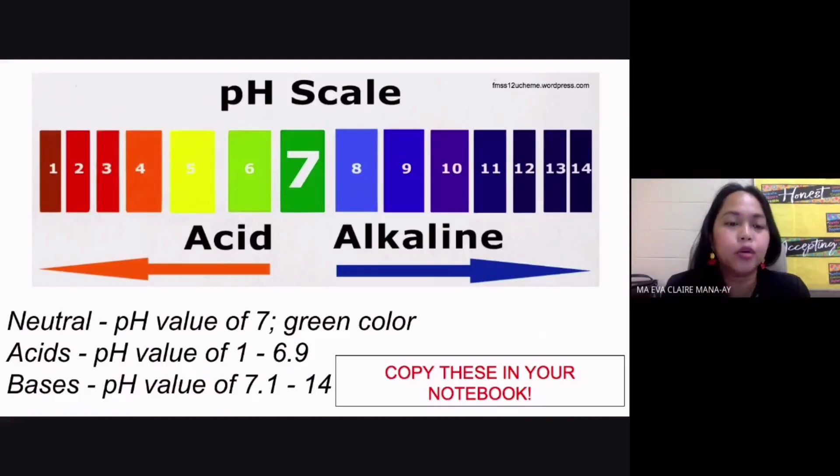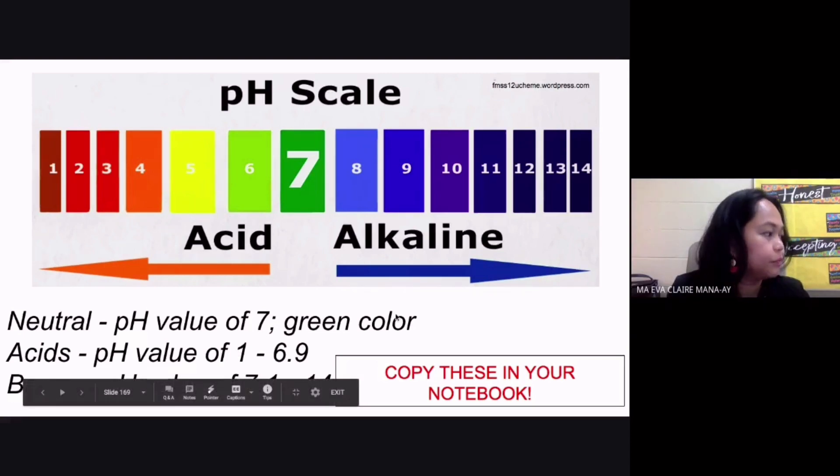Now you also have the term pH scale, and this one gives you the different colors according to your substance's acidity or alkalinity. If your substance is a neutral substance, the pH would be equal to seven. The pH value would be seven and of course the color would be green.